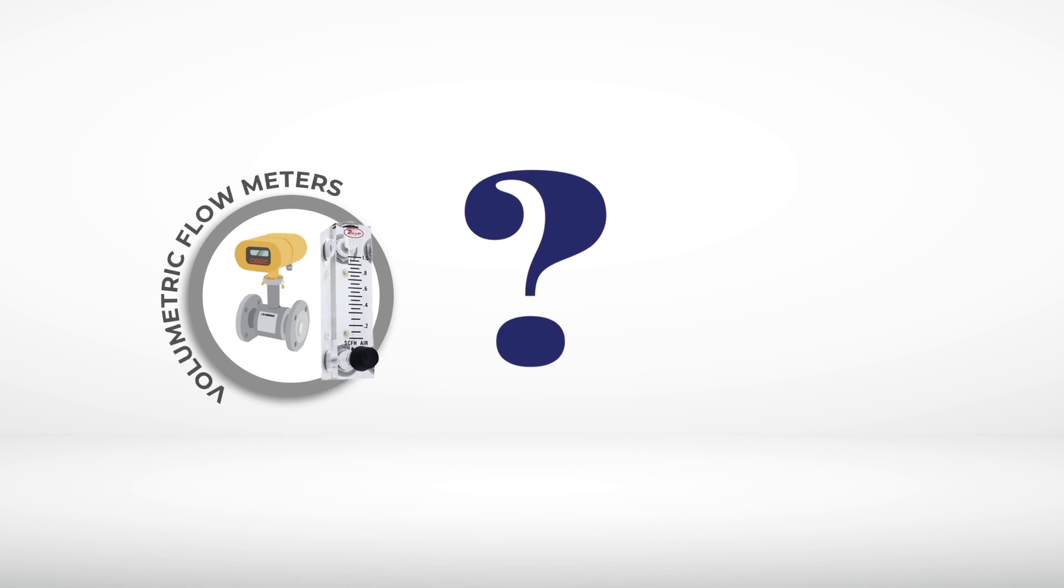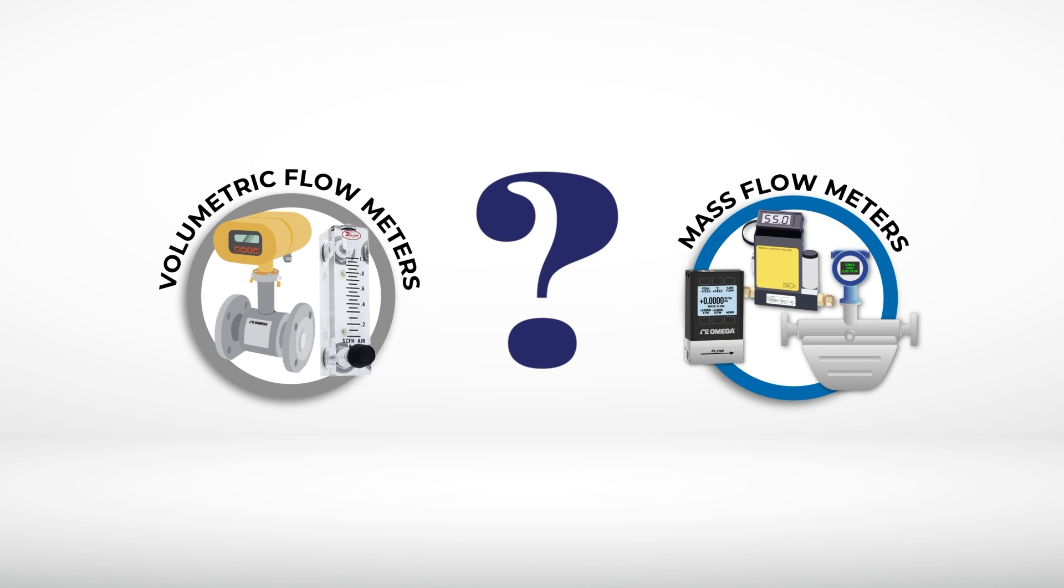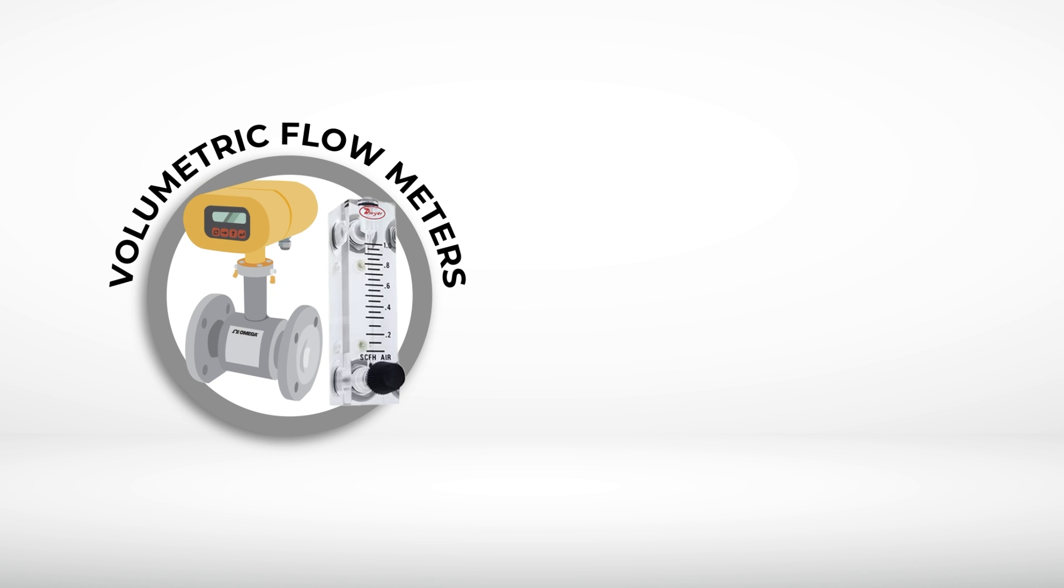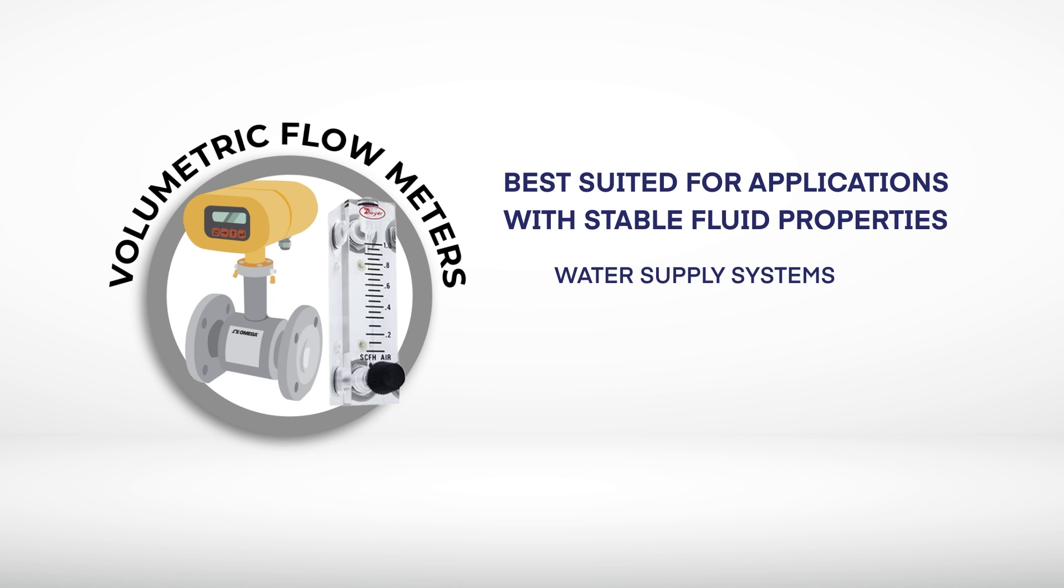Whether to use a volumetric flow meter or a mass flow meter depends on the specific requirements of the application and what kind of substance is being measured. Volumetric flow meters are best suited for applications where fluid properties like density, temperature, and pressure remain relatively stable. Applications such as water supply systems monitoring water consumption or measuring the flow of non-compressible fluids such as oils or chemicals, and in applications where very high accuracy isn't critical.